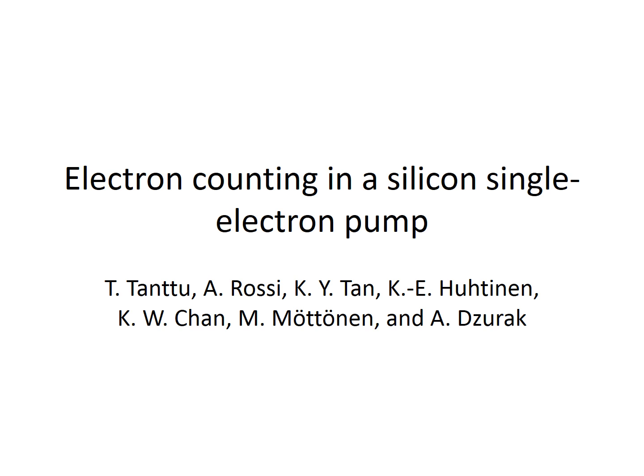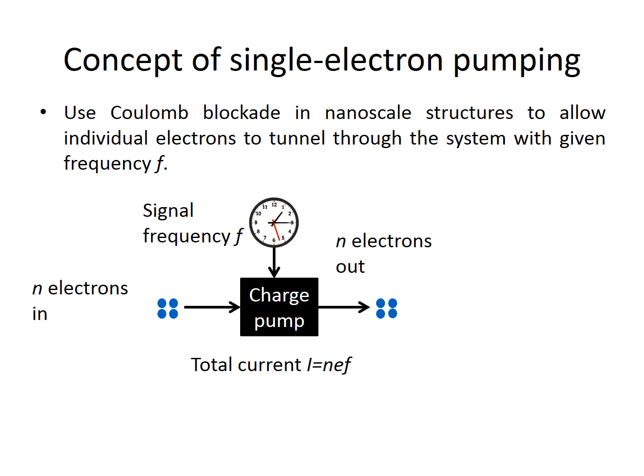Electron counting in a silicon single electron pump. In single electron pumping, the idea is to employ a nanoscale structure through which an integer number of n electrons is transferred per cycle with a frequency f. This yields a total current of n times f, and it may be used for the realization of the quantum ampere.